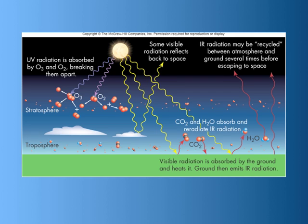A little bit of this greenhouse effect is important to sustain life on planet Earth; however, it is a delicate balance. If too much greenhouse gas exists in the atmosphere, it can lead to a runaway effect — ironically, what we might think of as a snowball effect or domino effect of warmer and warmer temperatures and more heat being trapped near the surface of the Earth.